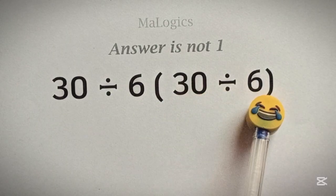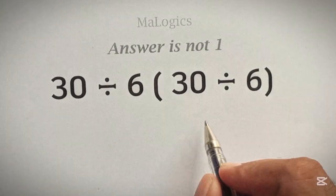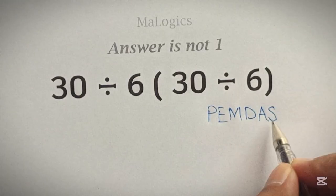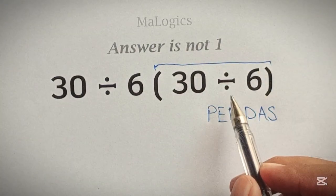Okay, for such order of operations, we have to apply PEMDAS. And guys, we know the PEMDAS rule very well, right? Alright, so first we will solve this parentheses. Here, 30 divided by 6 equals 5.